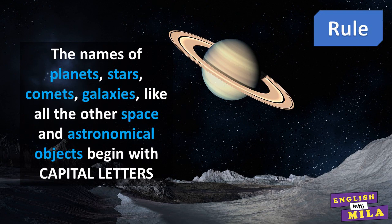And the rule says: the names of planets, stars, comets, galaxies, like all the other space and astronomical objects, begin with capital letters.